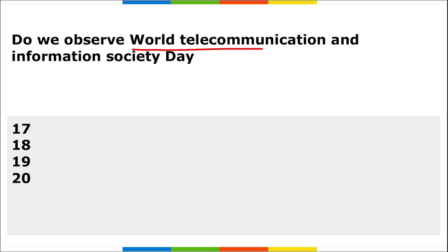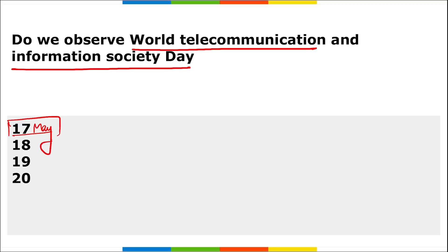When do we observe World Telecommunication and Information Society Day? Every year on 17th of May, this day is observed to create awareness about the use of the internet and other information and communication technologies in societies and economies. It also aims to raise awareness about bridging the digital divide. The theme is 'Empowering the Least Developed Countries through Information and Communication Technologies.' This day has been celebrated annually on 17th May since 1969.